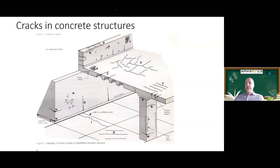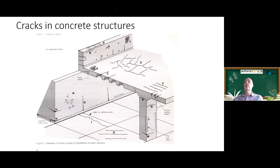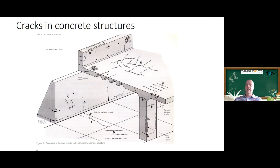This is a typical example of a structure with many cracks, all caused by the material itself rather than external loading. Looking at the crack patterns, we can cluster cracks A, B, and C as similar types, and work through D through N. Can anyone identify what causes cracks A, B, and C?